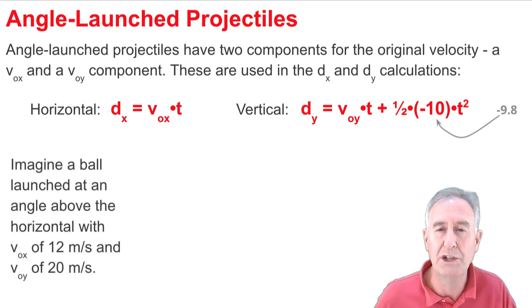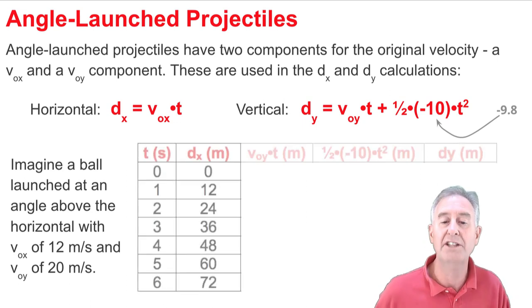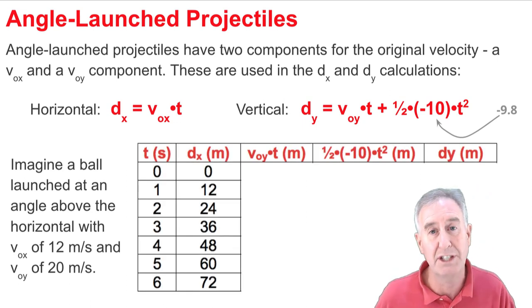So let's consider an example where the Vox is 12 and the Voy is 20. And let's fill in this table here for dx and dy values.